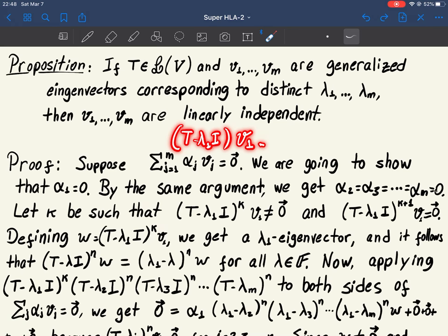If not, then it's not zero, but then we can apply again T minus lambda 1 identity. Then, maybe now it's zero. If not, apply it again.